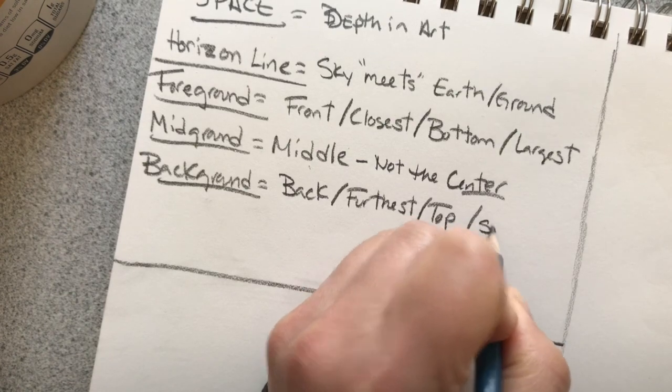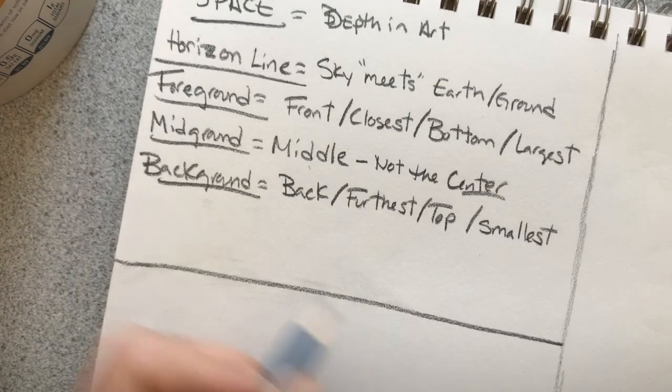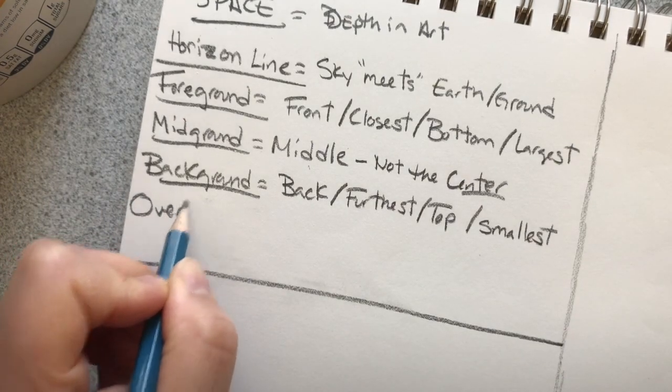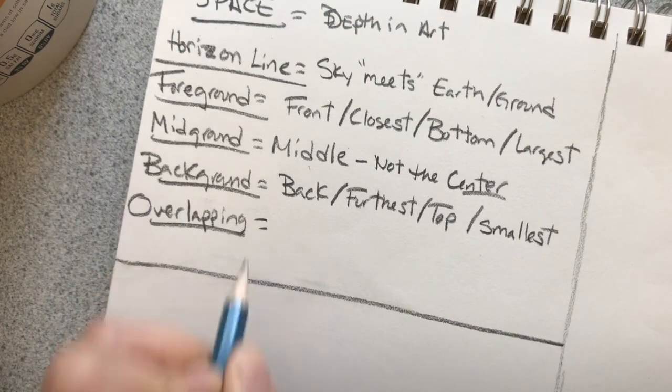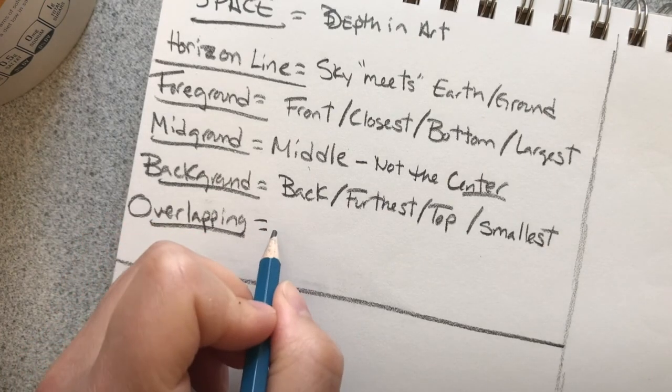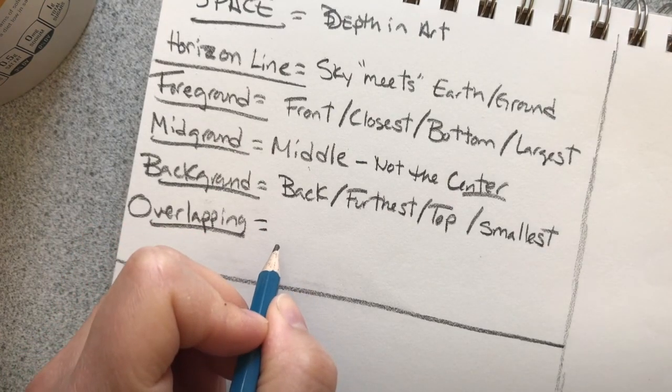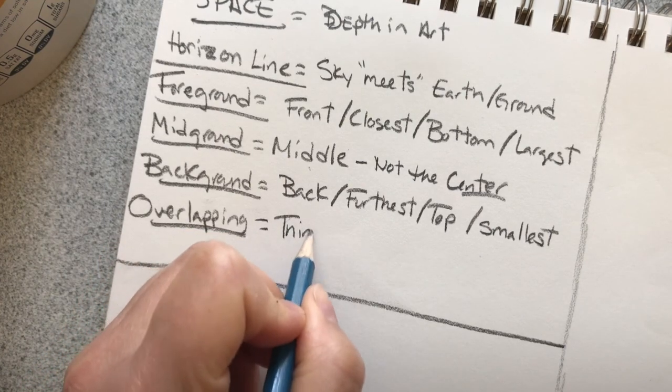Last one is overlapping. To show space, you got to have some kind of overlapping. Overlapping is basically when something is in front or behind or on top of something else.